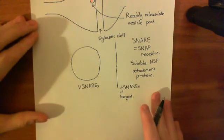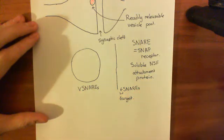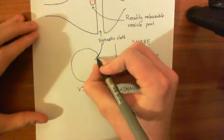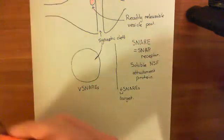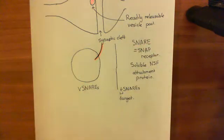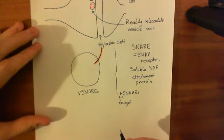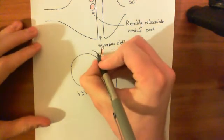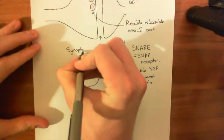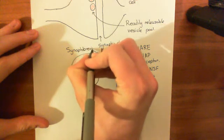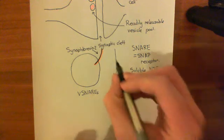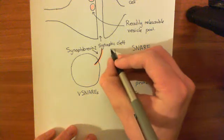Let's look at what these SNARE proteins in the vesicle and plasma membrane actually are. The one in the vesicle is a protein known as synaptobrevin. There are many different synaptobrevin proteins, and the one specifically in synaptic vesicles in the axon terminal of neurons is synaptobrevin-2. There are also SNARE proteins in the plasma membrane — the T-SNAREs — and there are two of these.